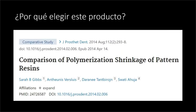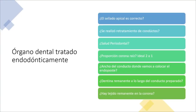También sabemos que todas las resinas tienen una contracción por polimerización. Sin embargo, la de Pattern Resin es mucho menor, bastante menor comparada con otros materiales similares en el mercado. Esto se debe, en buena parte, a que es una nueva fórmula. Ha mejorado Pattern Resin. Su principal uso es sobre órganos dentales tratados endodónticamente, al que todos estamos acostumbrados y en el que nos vamos a enfocar en esta charla.